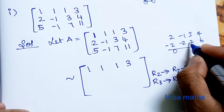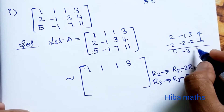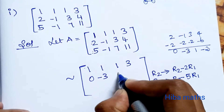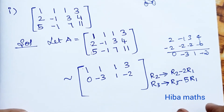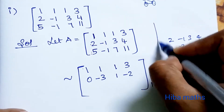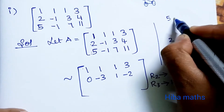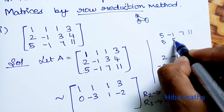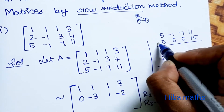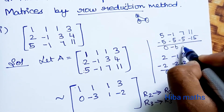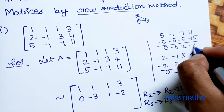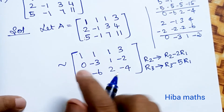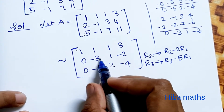Computing R2 minus 2R1: the result gives 0, minus 3, 1, minus 2. For R3 minus 5 times R1: R1 into 5 gives 5, 5, 5, 15. So minus 15 plus 11 gives minus 4. The result for R3 is 0, minus 6, 2, minus 4.